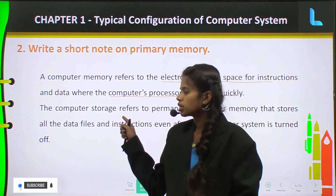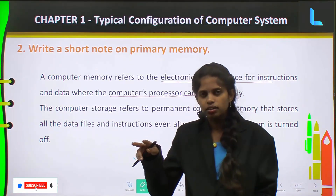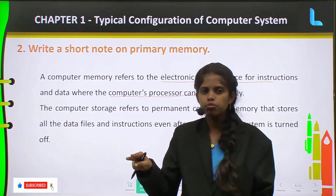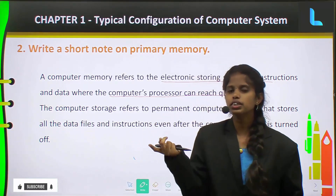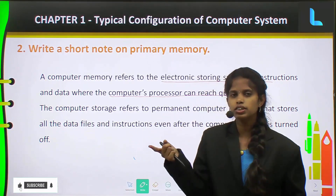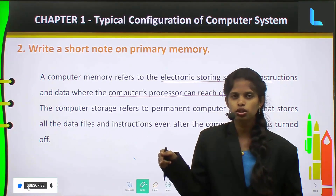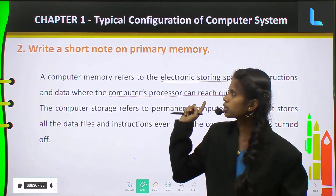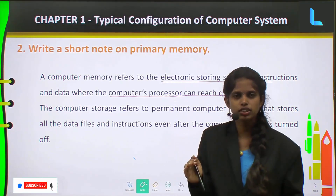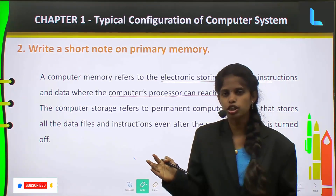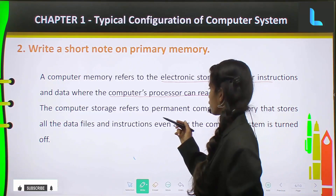Computer storage has two types: one is permanent storage and the other one is temporary storage. Now we will be discussing the primary memory, which is a temporary storage memory.